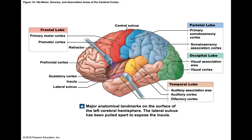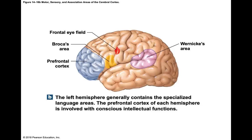In addition to association areas, there are also integrative centers in the cortex. These integrative centers often reside on one cerebral hemisphere but not the other. They receive information from multiple association areas. The prefrontal cortex is a large area in the frontal lobe that receives information from the sensory association areas and then predicts consequences. It is not fully developed until a person's 20s.